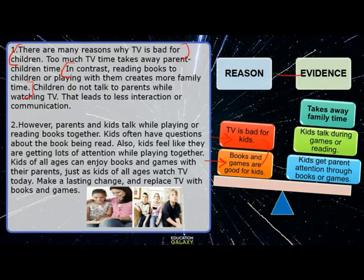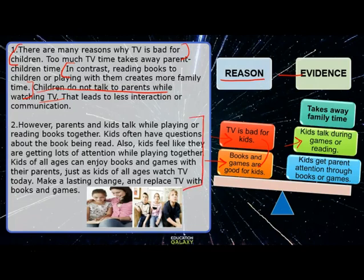What is the text evidence? Can we find in the evidence why the author says something and how the reasons are supported? The author says that TV takes away family time. Here is an example of how children do not talk to parents while watching TV — that takes away family time. And why are books and games good for kids? Kids talk during games or reading; they interact with parents while playing games or while reading, and they might have questions that they will ask parents. You can find this in paragraph 2. The author also says kids get parent attention through books or games, and kids feel like they are getting lots of attention while playing together. That shows you the author's reasons and the evidence or proof.